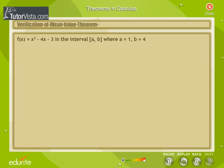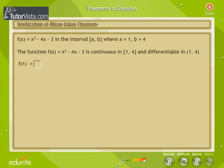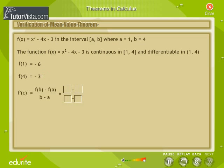Verification of Mean Value Theorem: Let us verify the Mean Value Theorem for f(x) = x² − 4x − 3 on the interval [A, B] where A = 1 and B = 4. The function is continuous on [1, 4] and differentiable on (1, 4). Find f(1), find f(4), and find [f(B) − f(A)] / [B − A]. Key in the values.